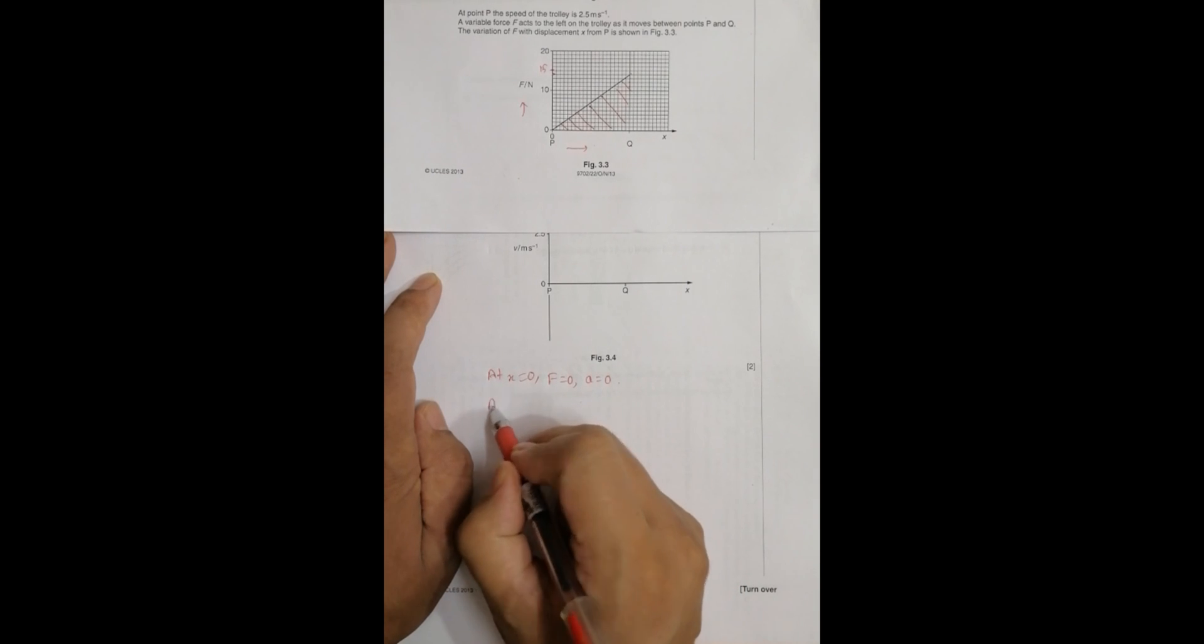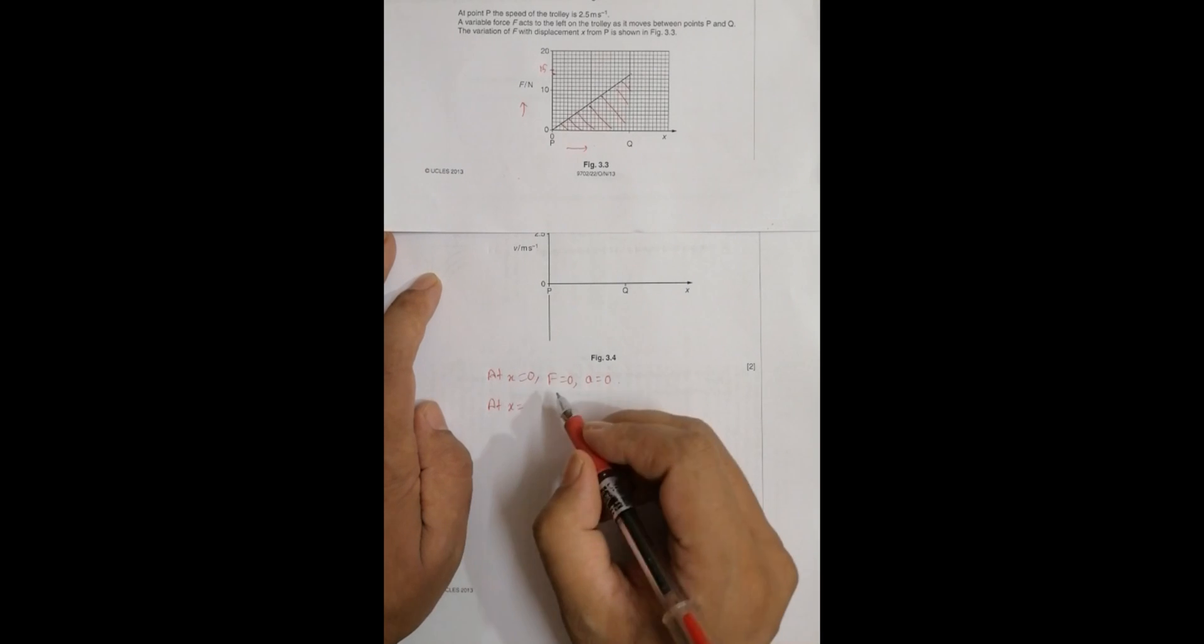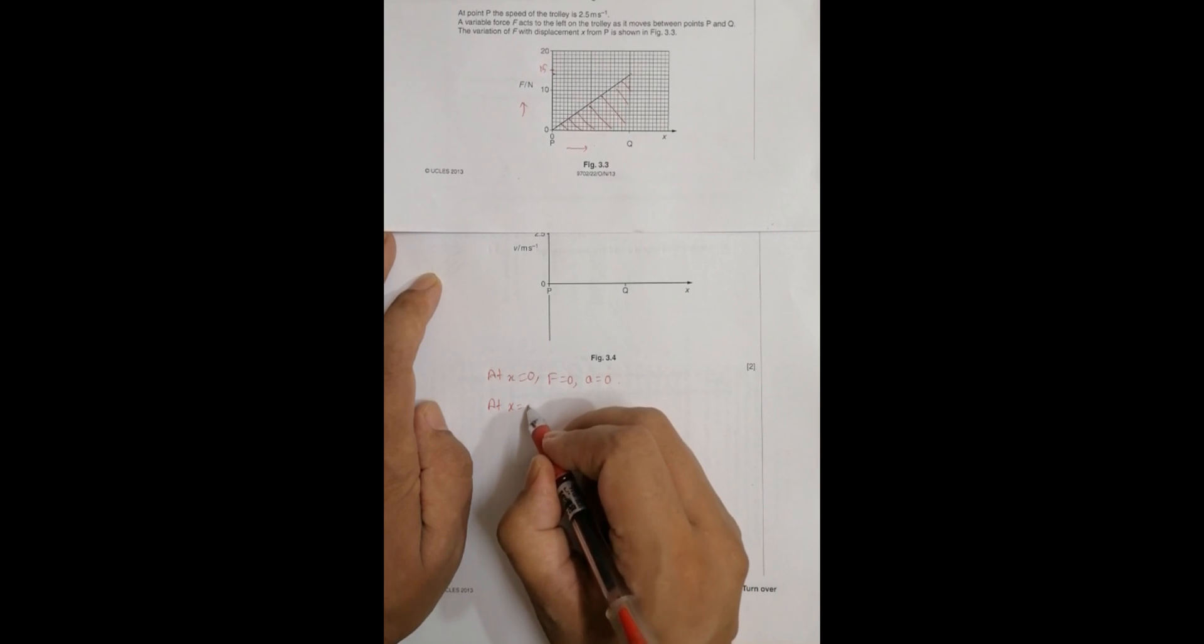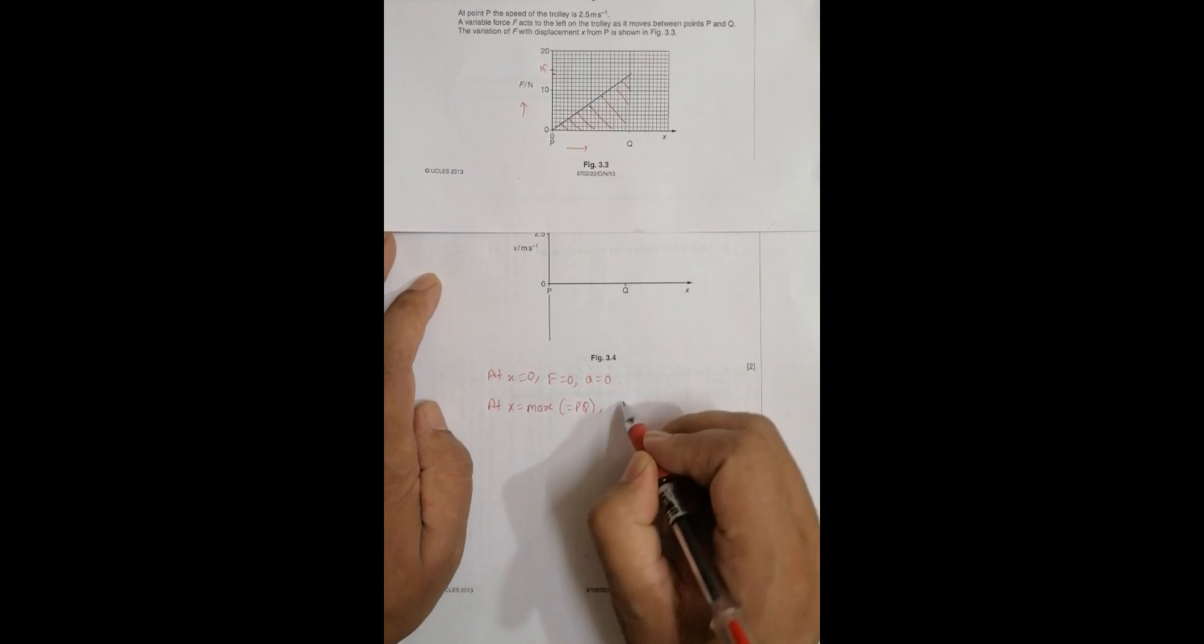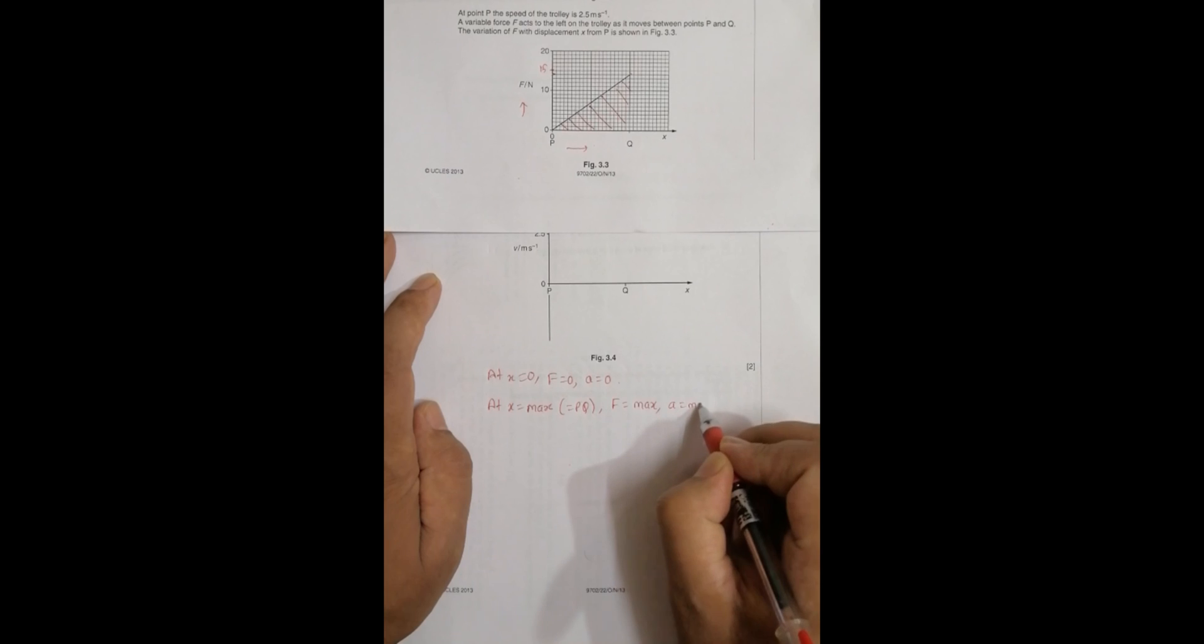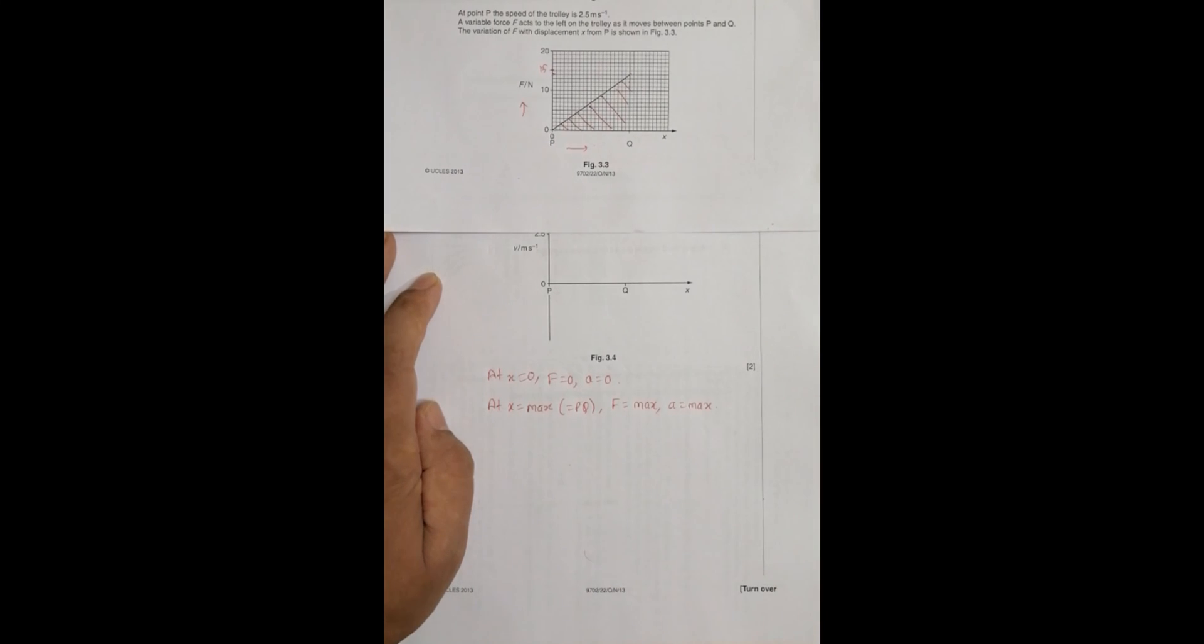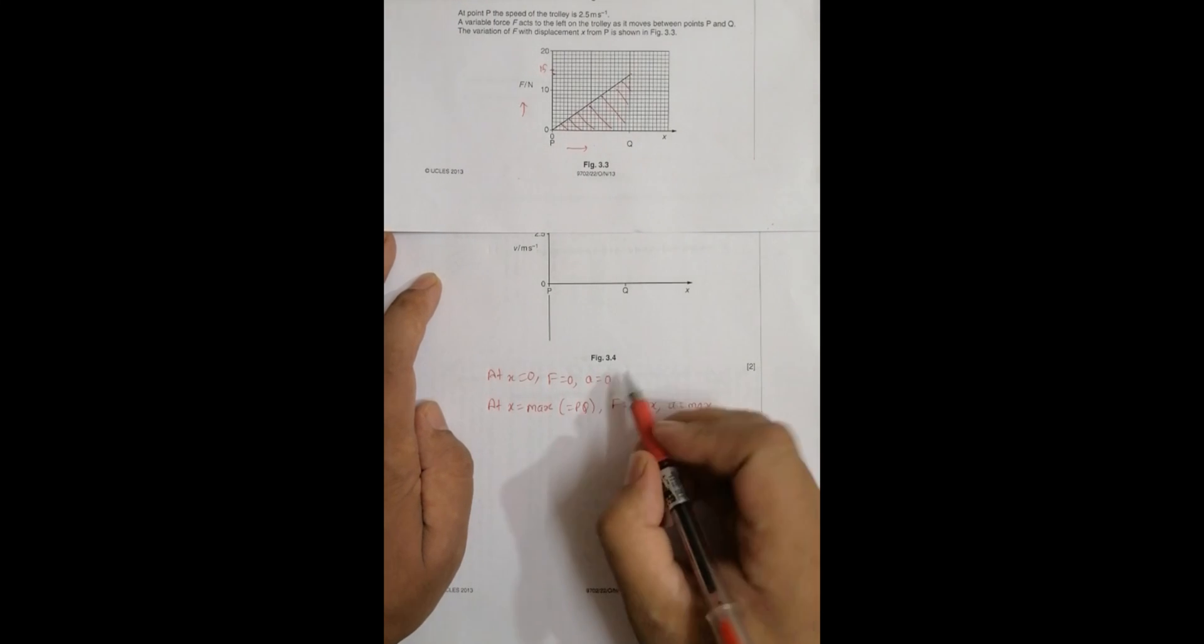And at x equal to PQ, the max value equal to PQ, we have F is equal to max, which means a is equal to max.